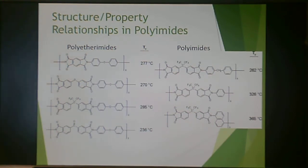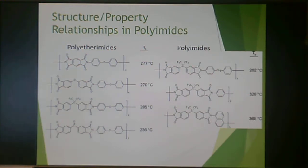This is a family of polymers, so there are lots of different possible structures. Polyetherimides and polyimides are both part of the polyimide family, but polyetherimides always have an oxygen somewhere in the backbone.